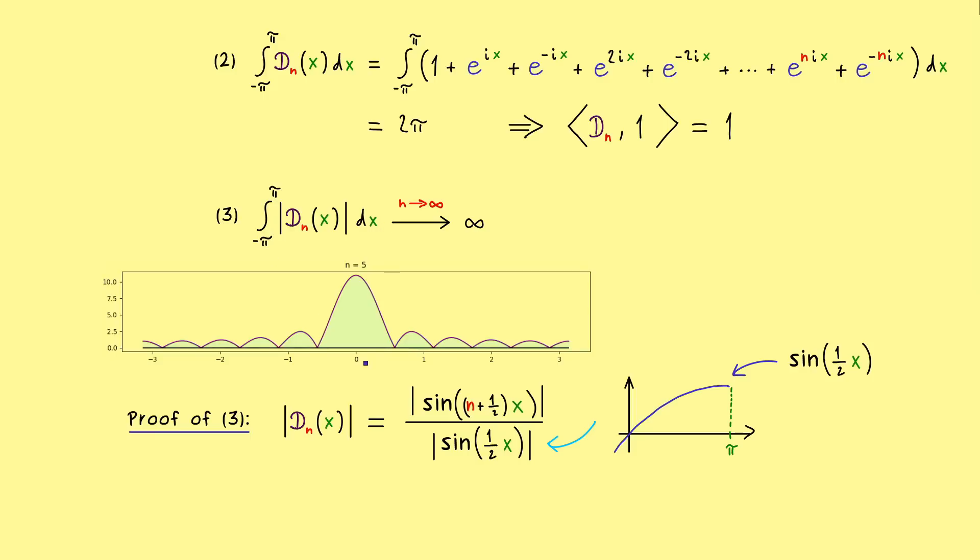So for example, the function x is definitely always bigger than sine of one half x. This is all we need, because if we divide by a bigger number, we have an estimate for our D_n(x). So clearly, we get smaller or stay equal if we divide by x instead of this sine function.